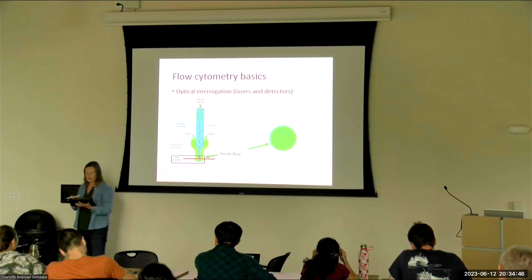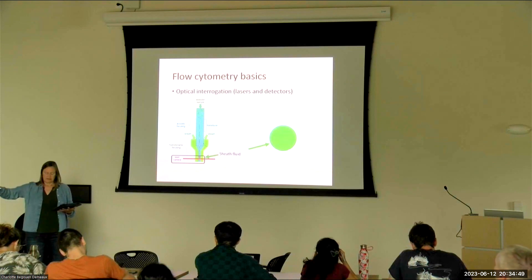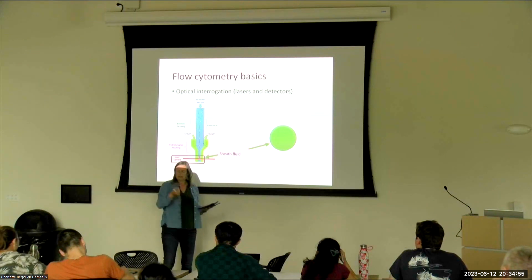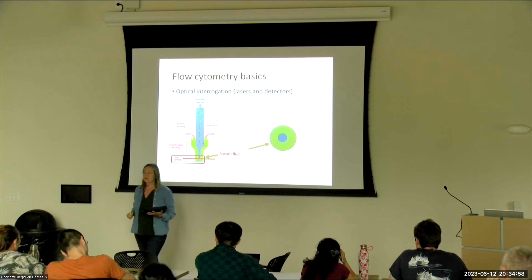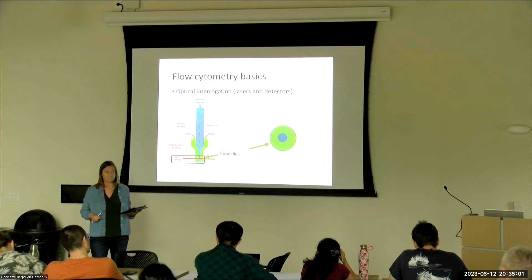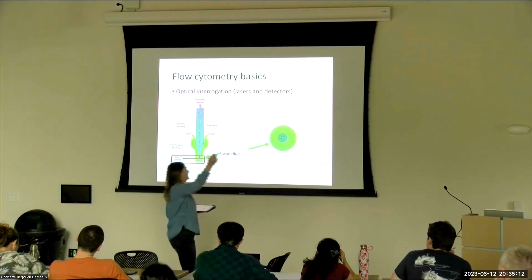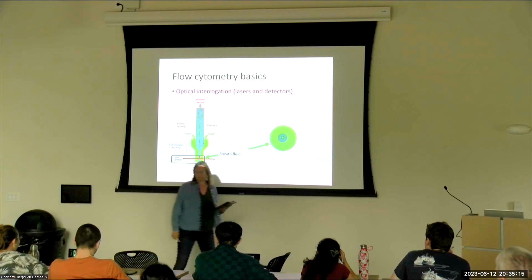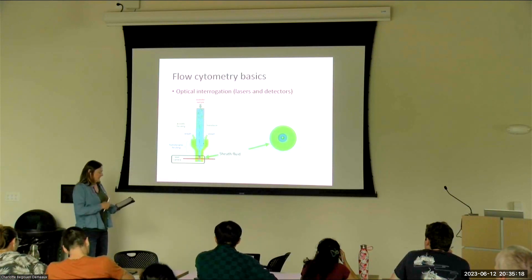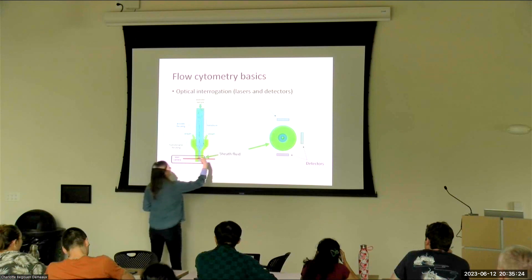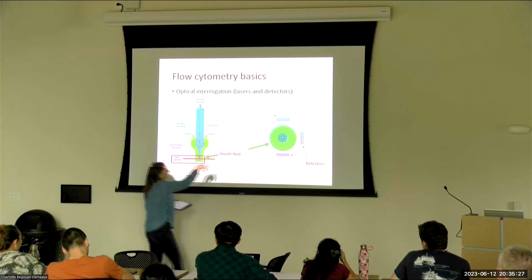One cell is flowing through and we take a cross section through that section. You can see the sheath fluid and then the sample fluid in the center. Cells in the sample are coming through and flowing into the wall. They have a bunch of detectors sitting around — a detector here, here, and around the back — so looking at the cross section you can see the detectors arranged around it.